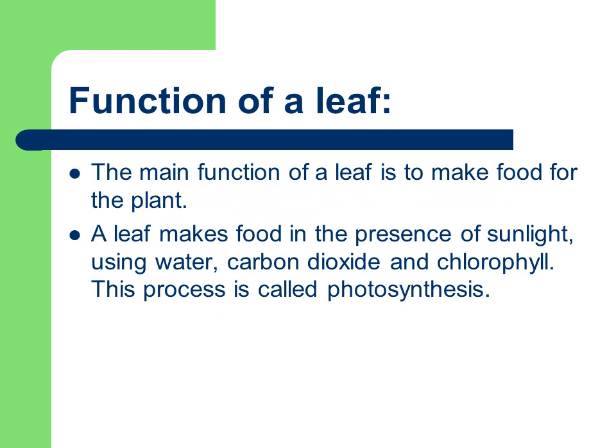What are the functions of a leaf? The main function of a leaf is to make food for the plant. A leaf makes food in the presence of sunlight, using water, carbon dioxide and chlorophyll. This process is called photosynthesis. So we can say that the leaf is the kitchen of the plant — it prepares food with the help of sunlight, water, carbon dioxide and chlorophyll.